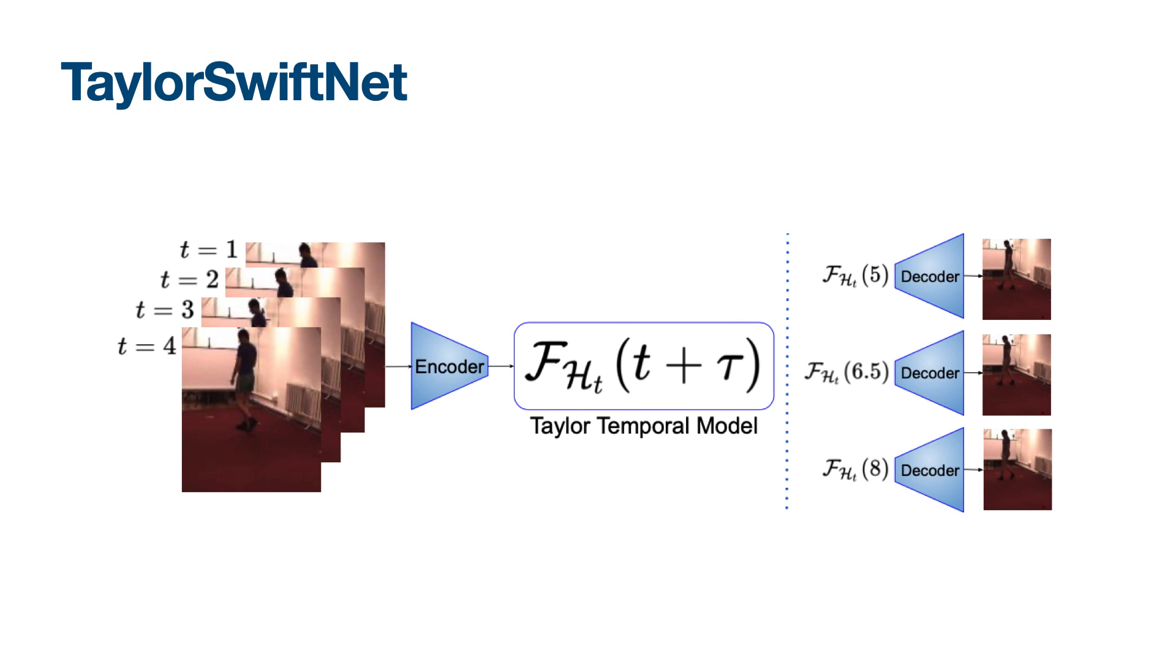Given a sequence of observed frames until time t, the encoder maps them into a latent space. The model infers a continuous function which can be evaluated for any positive value tau in order to forecast future frames at t plus tau. This process can be done in parallel because each feed-forward inference can be computed separately.